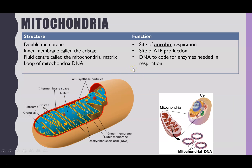The next organelle is the mitochondria. This is our first double membrane organelle — we have an outer membrane, and the inner membrane is actually folded to create a large surface area for one of the stages of respiration. Those folds create the structure called the cristae. On the inside, shown in blue on the diagram, we have the mitochondrial matrix, which is the site of another stage of aerobic respiration. Overall, the function of the mitochondria is as the site of aerobic respiration, producing lots of ATP.